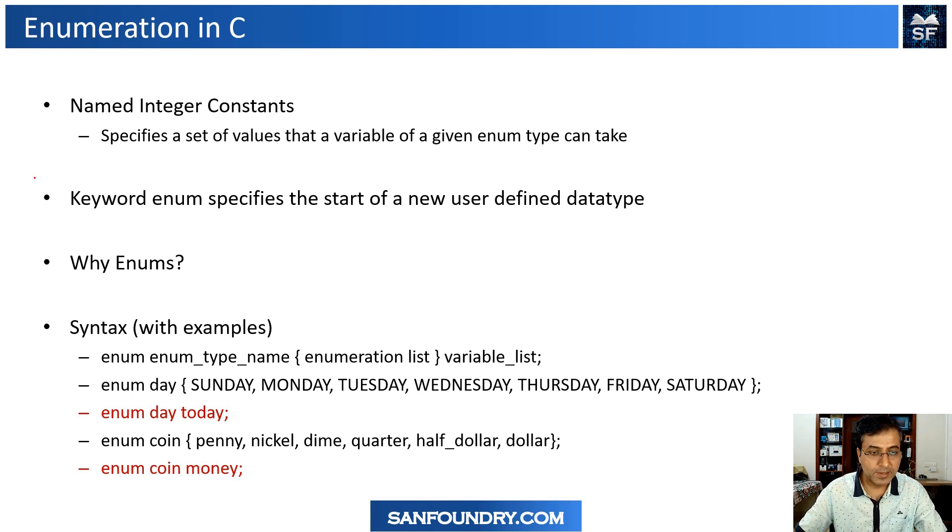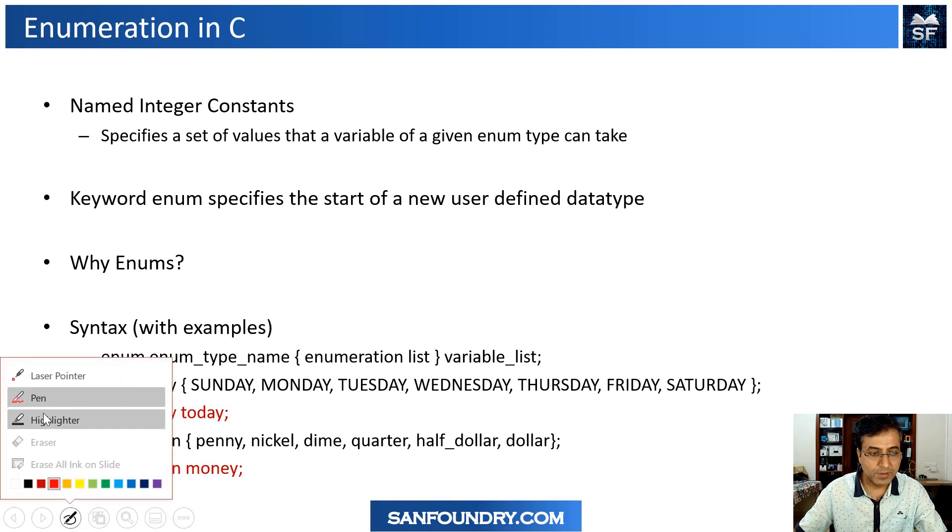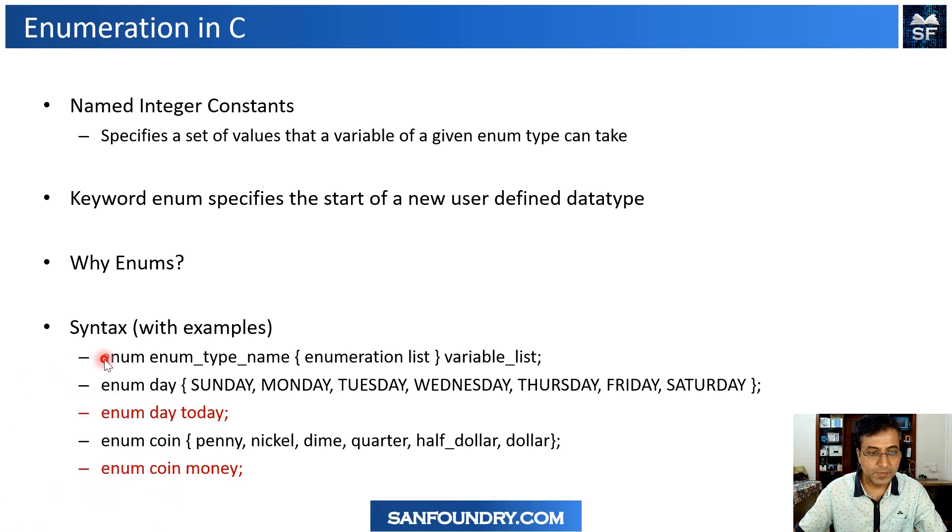Let's look into the syntax. When you see enums, what you will find is enum is the keyword, and then you are defining a type followed by the enumeration list. In this you discuss the various integer constants where you have given names to them, and then you can define certain variables. Looking into the example, we have declared enum called day.